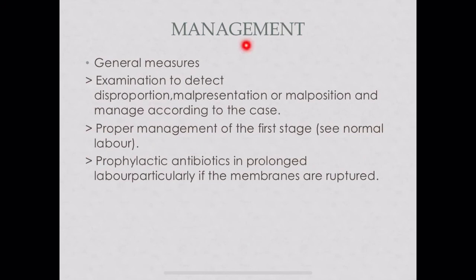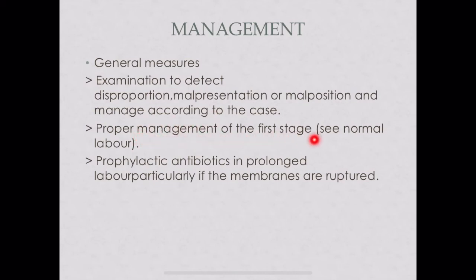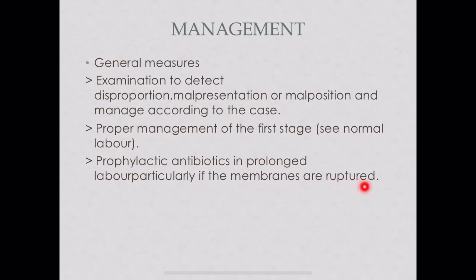Management of hypotonic uterine inertia — general measures: examine to detect disproportion, malpresentation, or malposition as these are causative factors. Manage the first stage properly. Use prophylactic antibiotics because if membranes have ruptured and repeated vaginal examinations are performed, there is risk of infection.